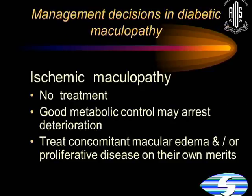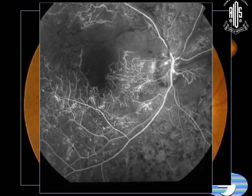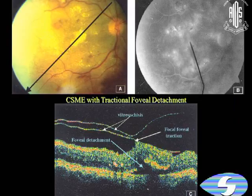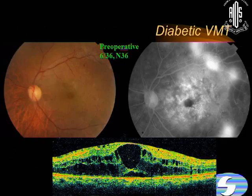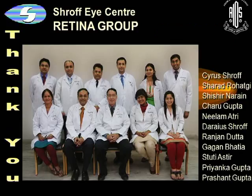Ischemic maculopathy must be treated on its merits — for the ischemic element there is no treatment, but if there is concomitant edema that has to be treated on its own merits. We know the visual potential is poor in such cases, but if edema is present simultaneously we should treat it. If there is a tractional element these eyes require surgery. In one case with proliferation, there was gross edema and a taut hyaloid, and after vitrectomy the edema settled down and the patient is doing well.